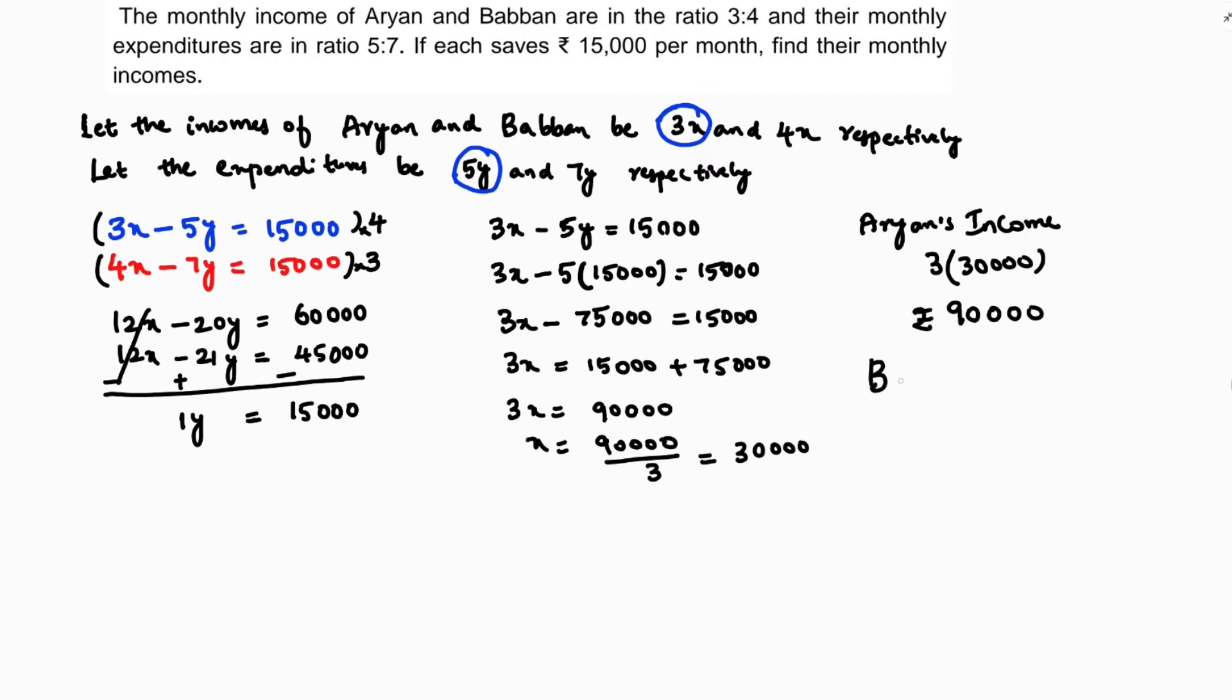Babban's income is 4 times 30,000, so Babban's income is Rs. 1,20,000. And Aryan income is 90,000.